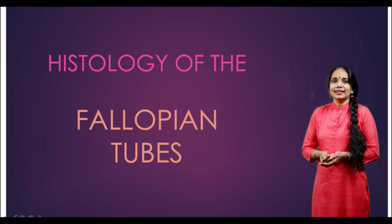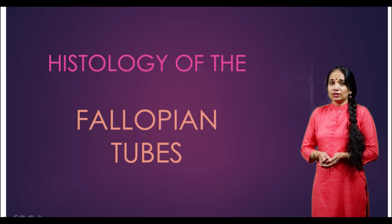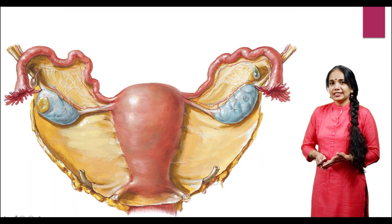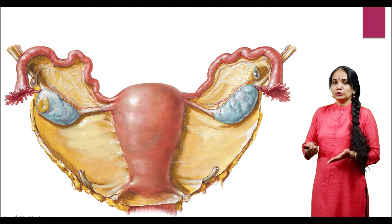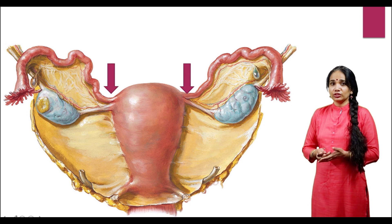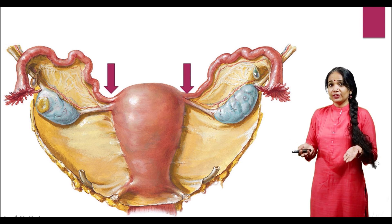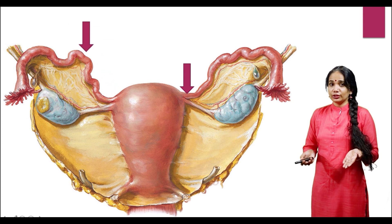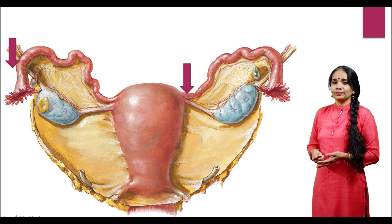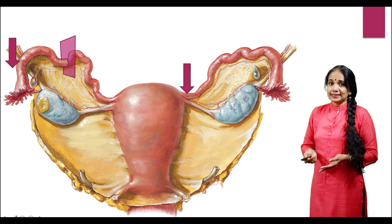Hello everybody, let's talk about the histology of the fallopian tubes. We've already seen the histology of the ovary. The fallopian tubes are also called the uterine tubes — they are a pair of tubular structures attached to the supralateral corners of the uterus.